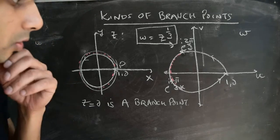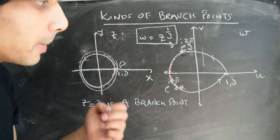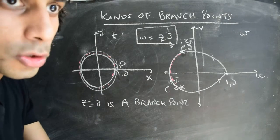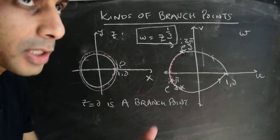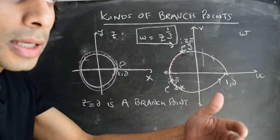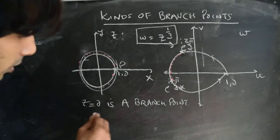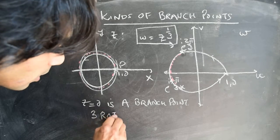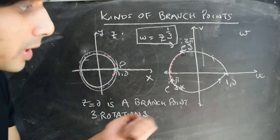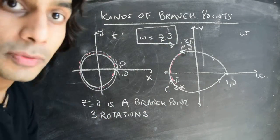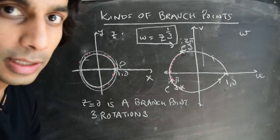This leads us to ask a more general question: given a mapping, how many rotations do you have to make in the z-plane? If there is a loop that you make around a particular branch point, how many rotations do you have to make such that in the w-plane you're back at the point where you started? In this case we need three rotations. We can work out why, because we've talked about mappings of the form z to the power of 1/3 and in general z to the power of 1/n where n is any integer.